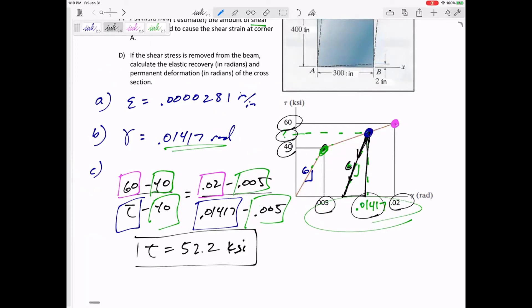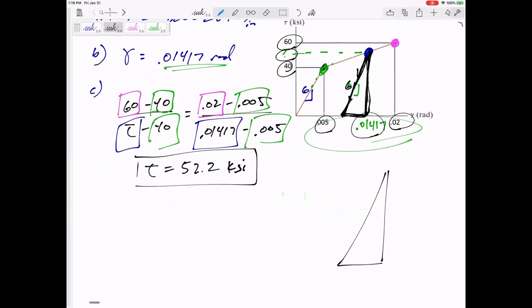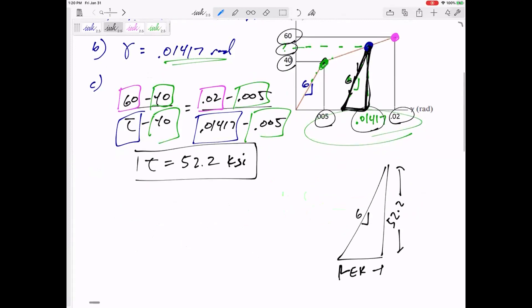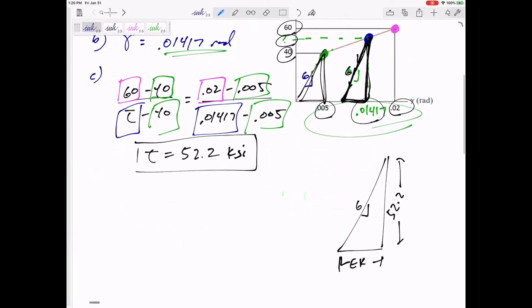And so I like to look at this and I call it the unloading triangle. That unloading triangle would have a height of what? 52.2. A base of the elastic recovery, not the elastic region, the elastic recovery and a slope of G. And it is similar to that triangle. So you might think about it as similar triangles. Part D.